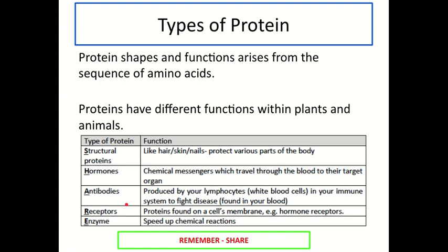It's really important that you know the five types, and a way to help you remember them is the mnemonic SHARE: S-H-A-R-E — Structural, Hormone, Antibody, Receptor, and Enzyme. If you remember that, it should help you in your tests or exam. We'll cover four of these proteins in other topics, but Key Area 4 focuses specifically on our last type, which is enzymes.